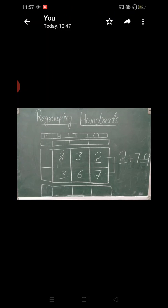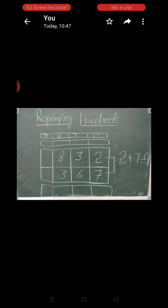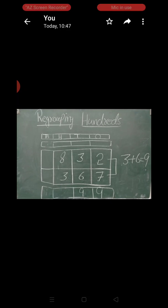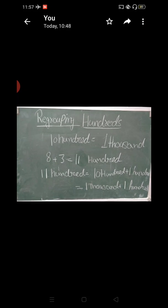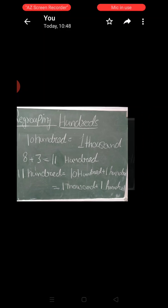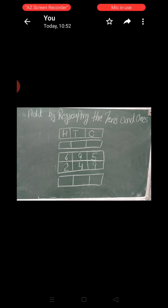Now we are doing one more example of regrouping hundreds. We have two three-digit numbers: 832 and 367. First of all, we add the ones place: 2 plus 7 equals to 9. In the next step, we add the tens place: 3 plus 6 equals to 9. In the next step, we add the hundreds place: 8 plus 3 equals to 11. We know 11 hundred equals to 10 hundred plus 1 hundred, and 10 hundred equals to 1 thousand plus 1 hundred. So I write 1 in the hundreds place and 1 in the thousands place. Our overall answer is 1,199.